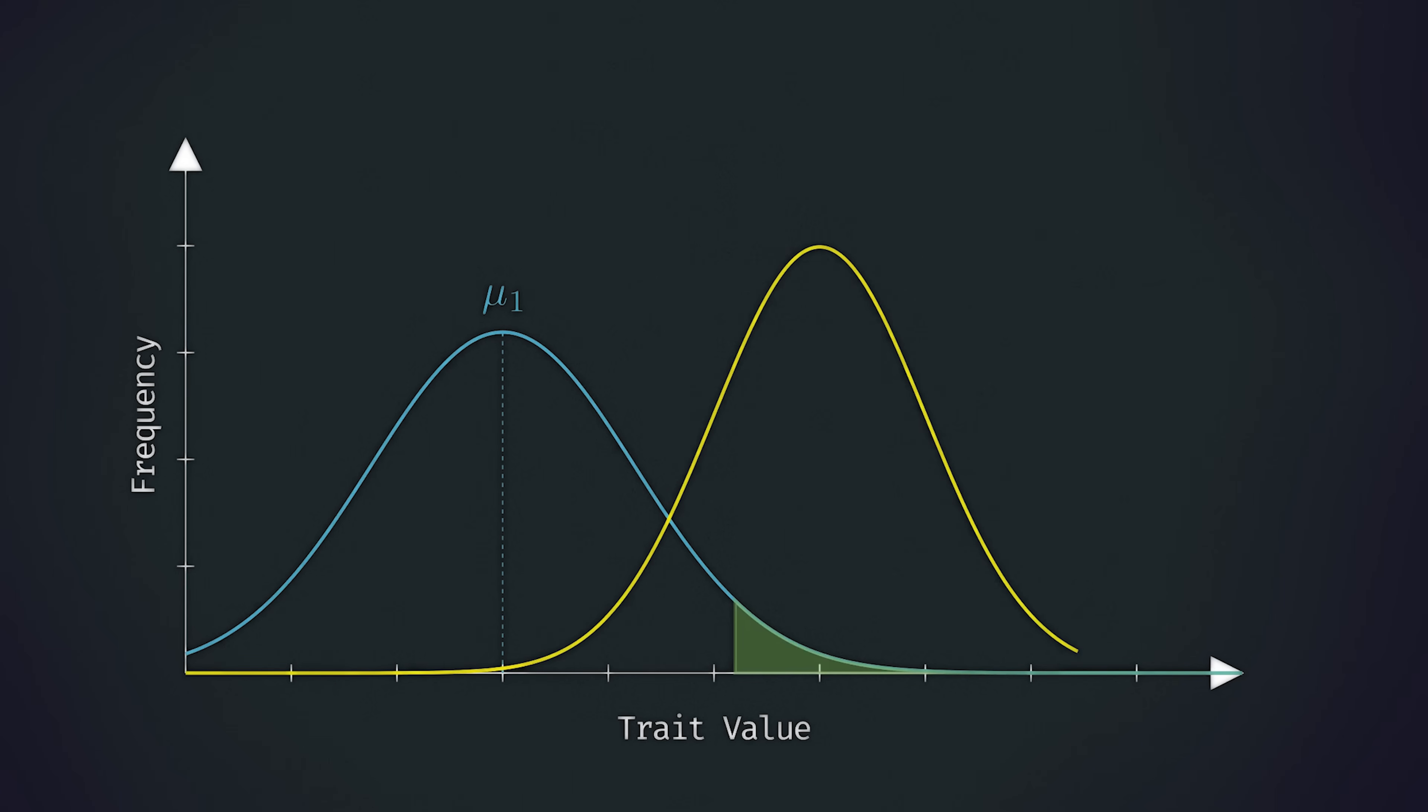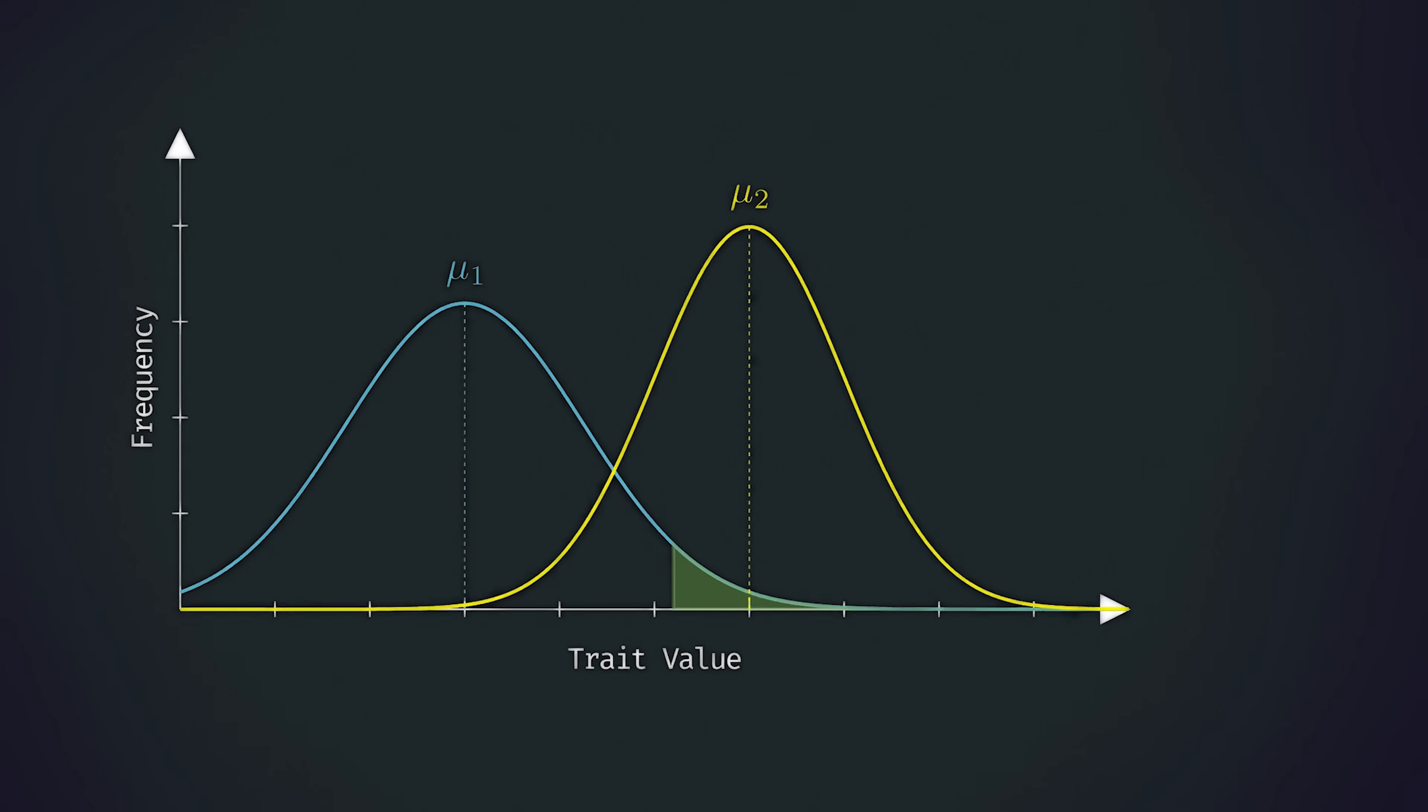This means that in the next generation, we'll see a new distribution over the traits, as indicated by this new yellow Gaussian. In this example, we're seeing a very large selection pressure for the traits, as only individuals in this critical region are able to survive, and the distribution has shifted dramatically very quickly. But let's take a step back and ask, how do we even measure evolutionary change?